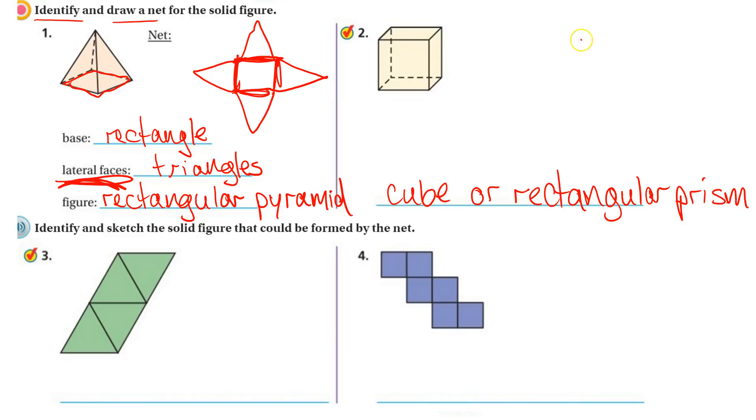And then its net would look, with cubes, the nets always look kind of like a cross. Just like that. Of course they can be made in different ways, but that's a common design for a net for a cube.